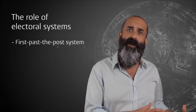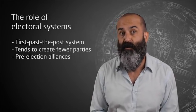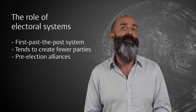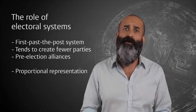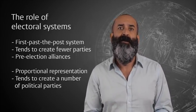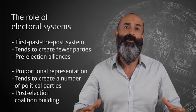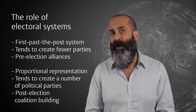First past the post tends to create fewer parties as it forces pre-election alliances seeking the largest share of the vote. Quite simply because small parties cannot survive in this system. Proportional representation, on the other hand, tends to create a number of political parties, but often elections are followed by lengthy coalition-building negotiations because no single party can muster parliamentary majority. There is no hard-set rule to this, but the general tendency is that first past the post does not allow a full representation of a country's diversity if that diversity is nationwide.